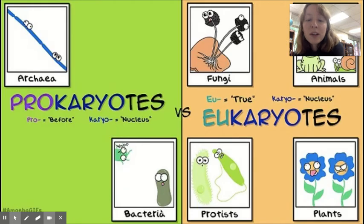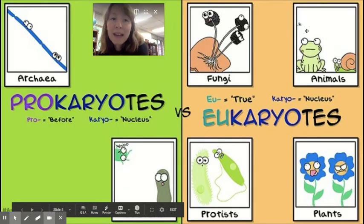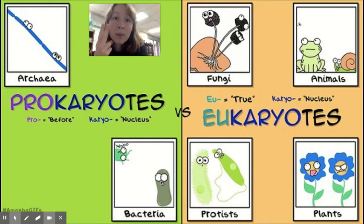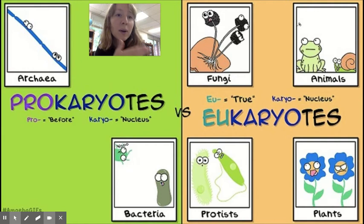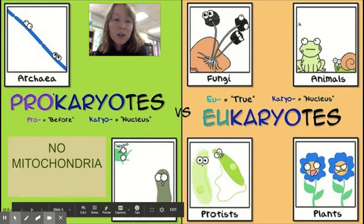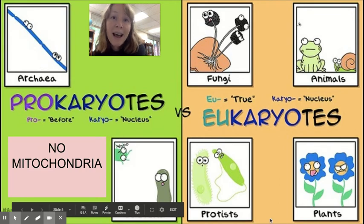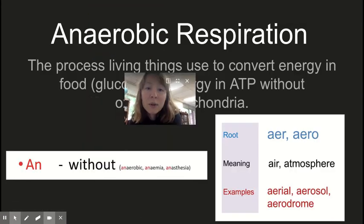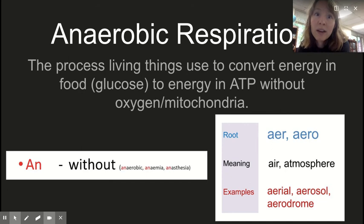When we look at our six kingdoms of life, four of them are eukaryotes and two are prokaryotes. Eukaryotes have mitochondria, but prokaryotes don't have any complex organelles. These two kingdoms — archaea and eubacteria — do not have mitochondria.